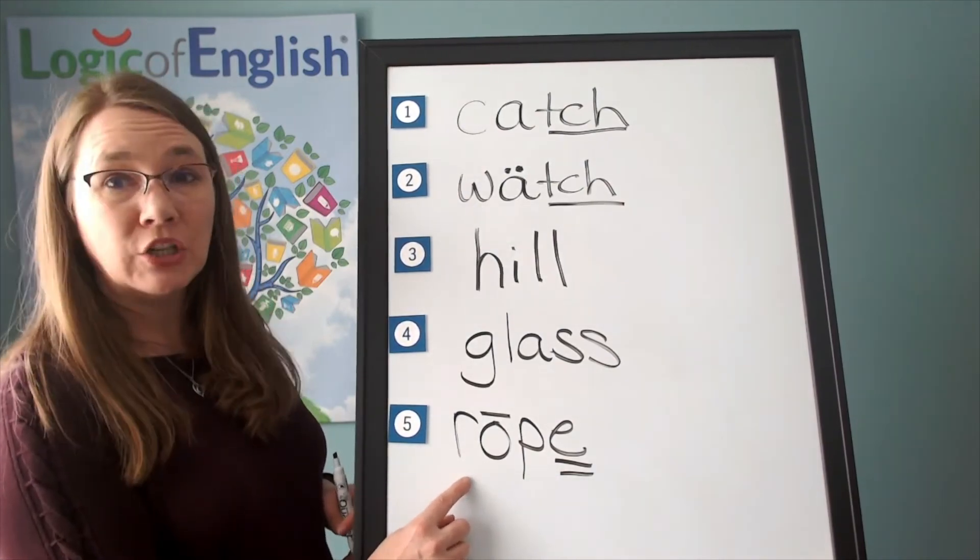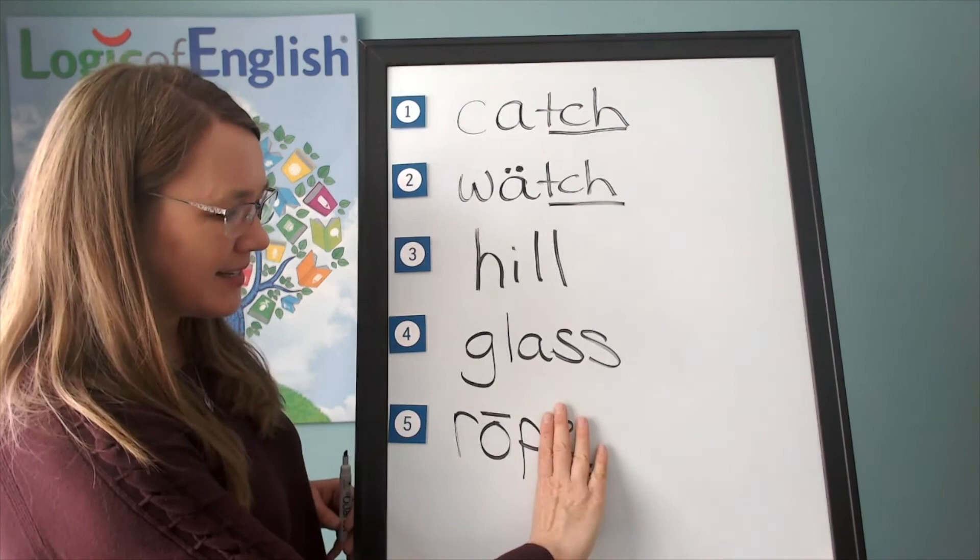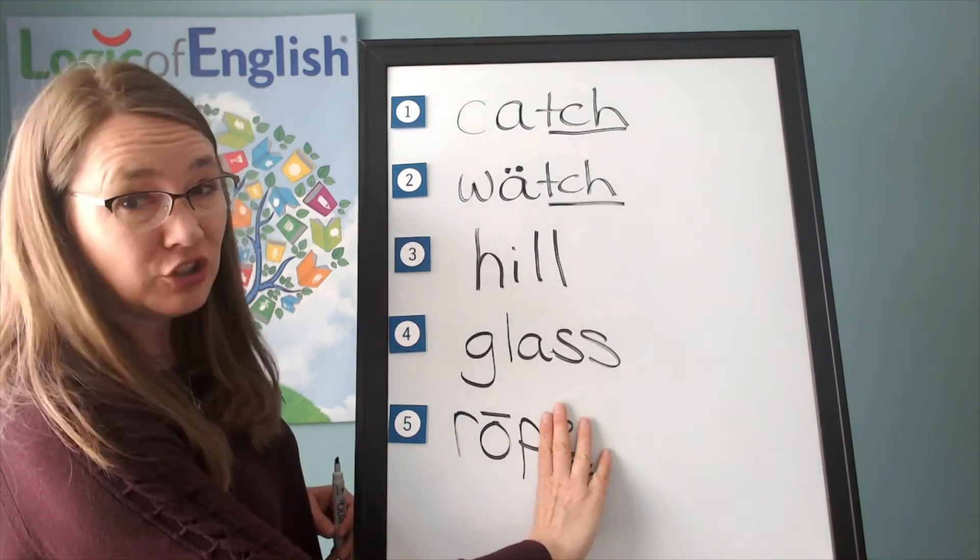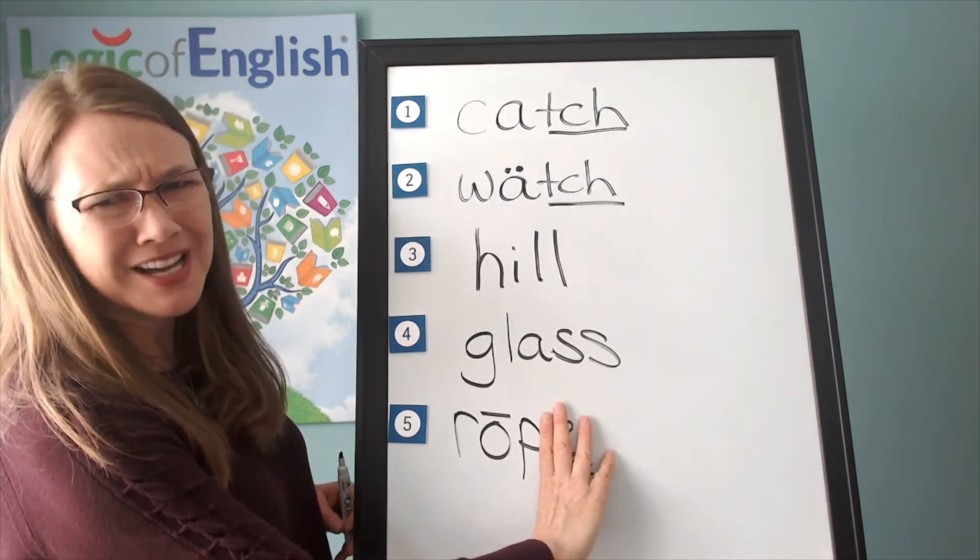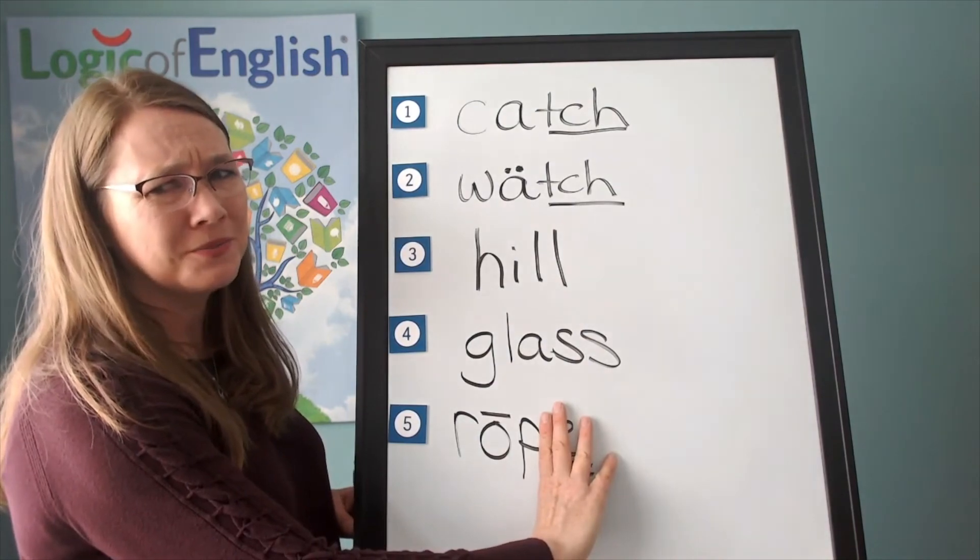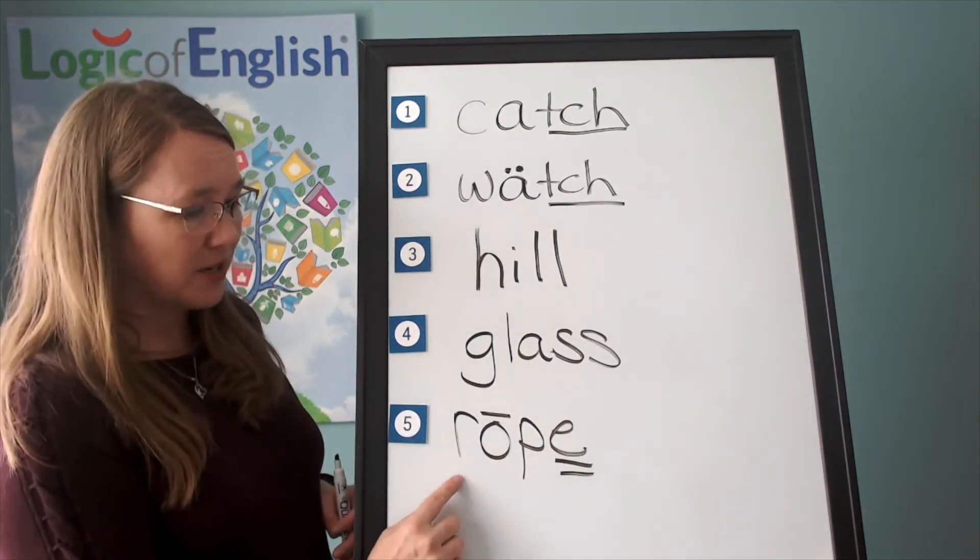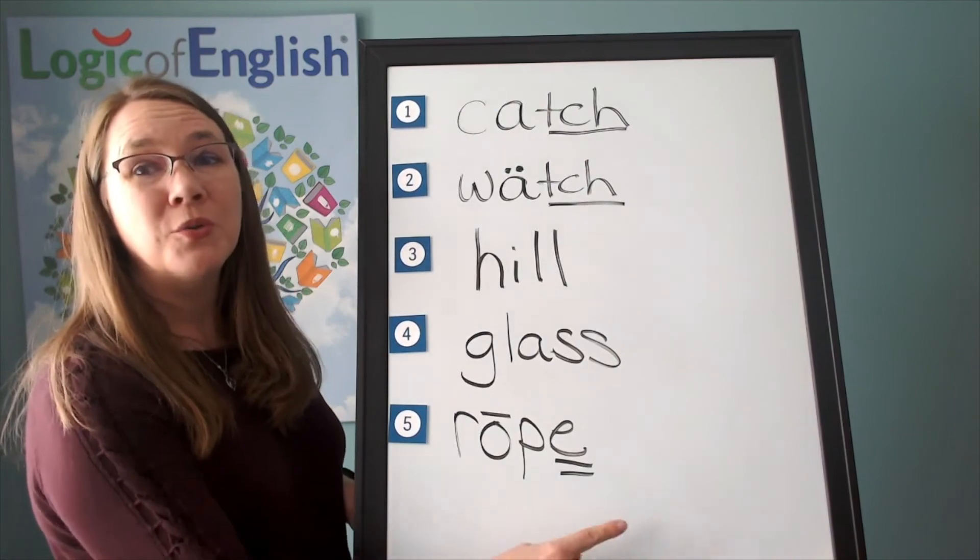Let's sound it out. R, o, p. Rope. What would it say without the e? R, op. Rop. I don't know what a rop is. Do you? Me either. So we add the e back and it becomes r, o, p. Rope.